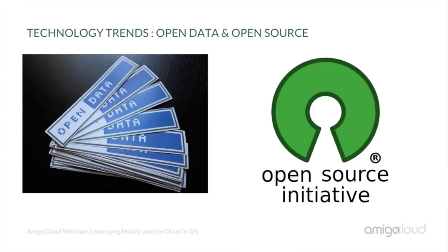Another interesting trend is that open is becoming the norm, not the exception. There are two elements: open data and open source. The idea that some data should be freely available has created interesting projects like OpenStreetMap, which is becoming more popular every day. We're also seeing cities and local governments pushing their data out through open portals. This openness enables us to have more base layers and richer data to improve our GIS datasets.